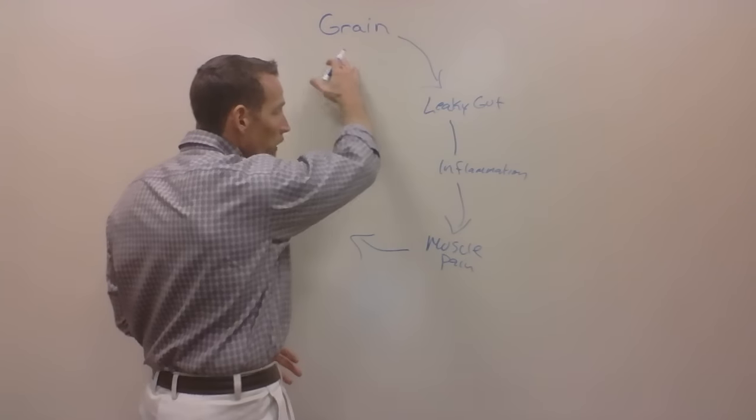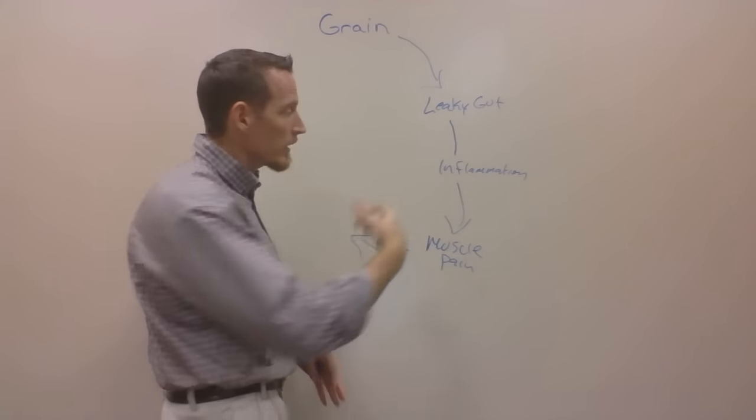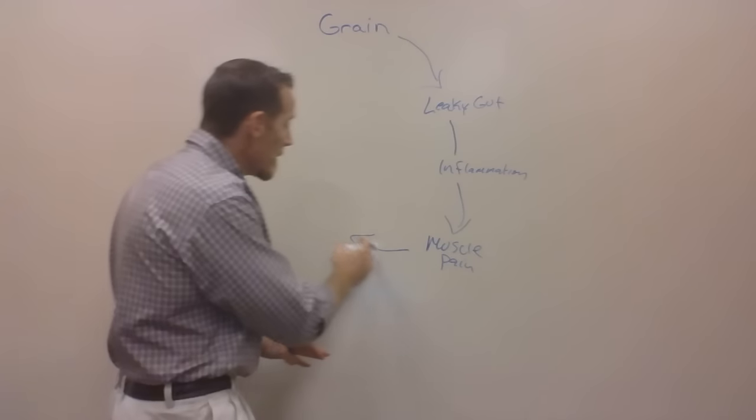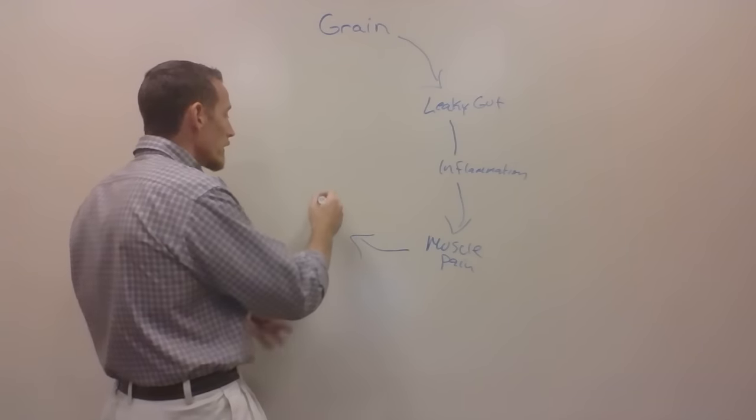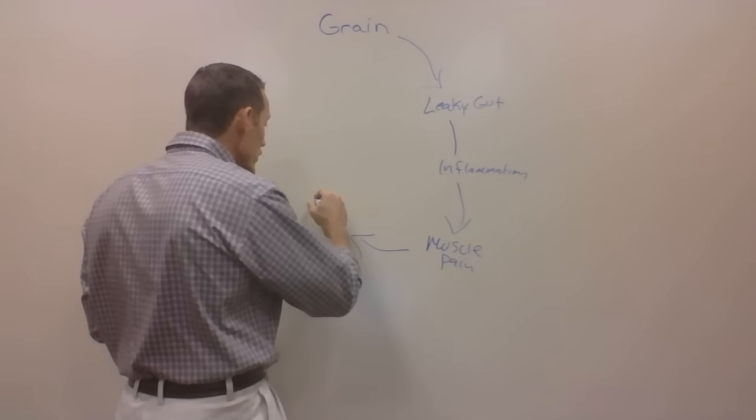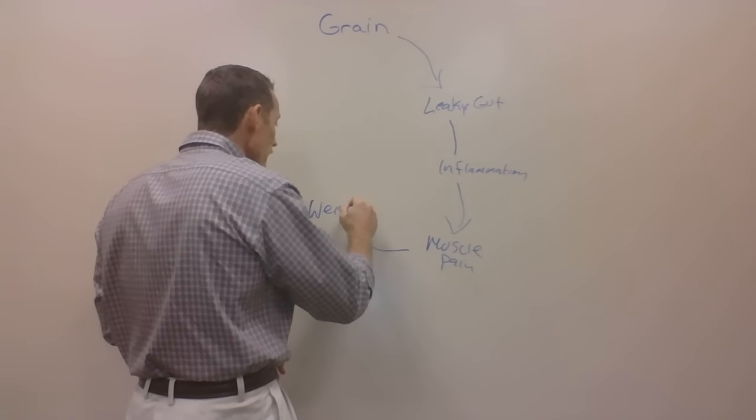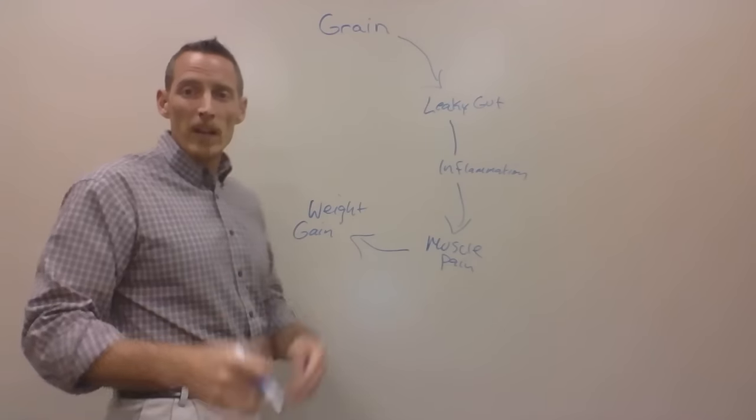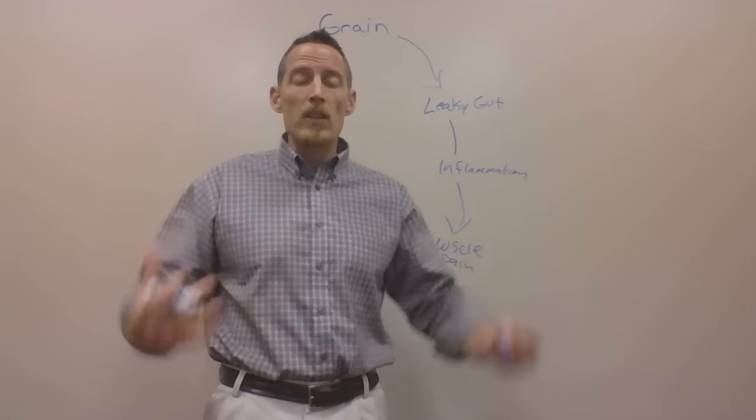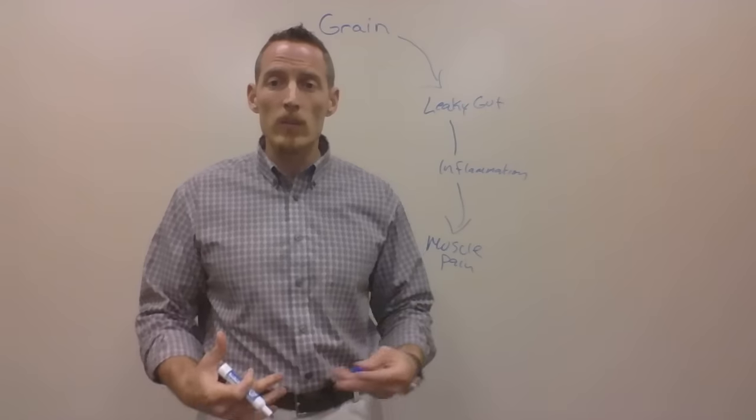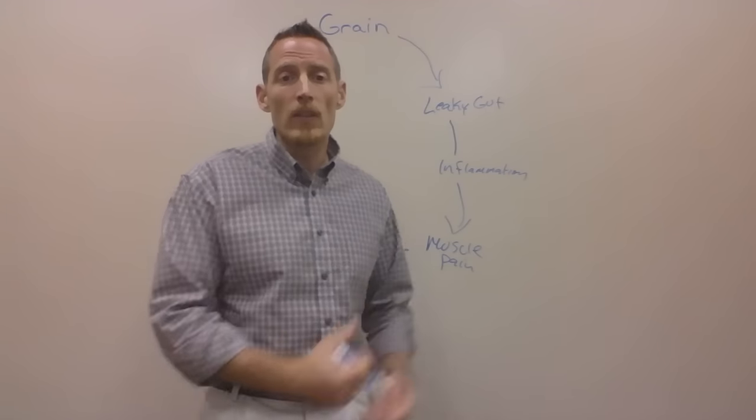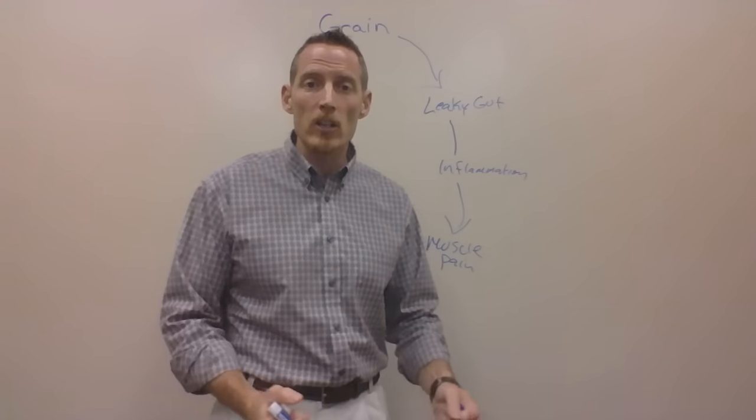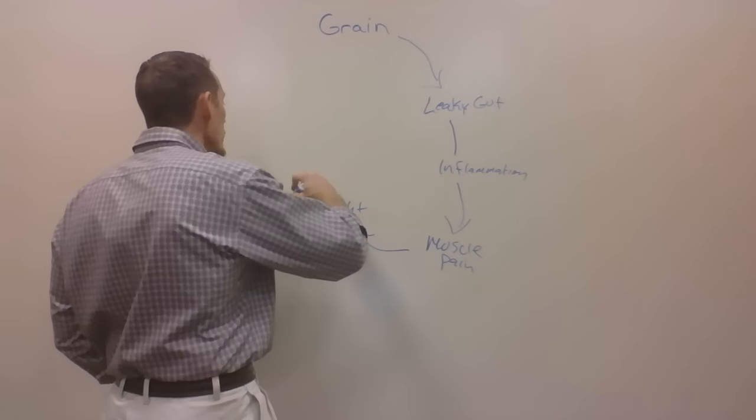So again, we're eating this grain, we develop a leaky gut that causes chronic inflammation that can cause pain. Then we get the side effect of that as a hormone change, which causes weight gain. What happens when we gain weight? We don't want to exercise as much. We're heavier, so there's more pressure on all of our joints and muscles. The whole act of exercising itself becomes painful because we're carrying around so much extra weight.